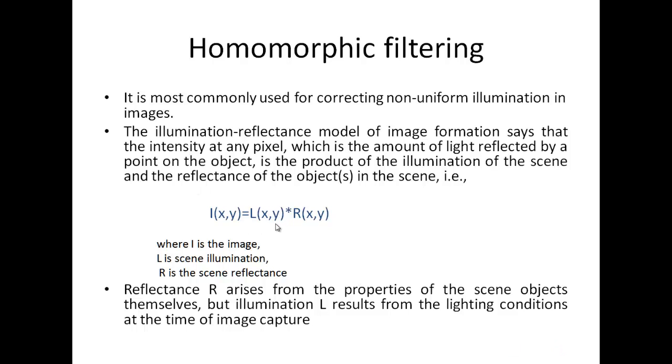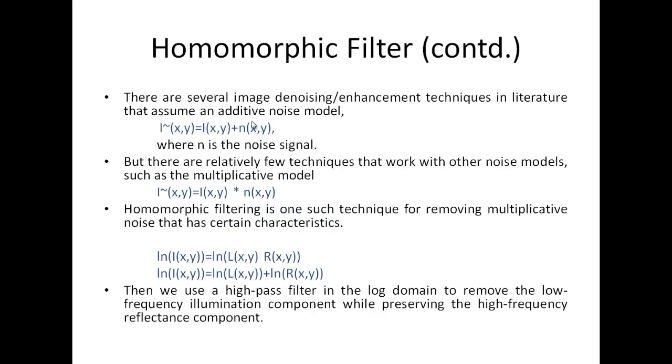We already know that the product of the scene illumination and the reflectance gives us the intensity at a particular pixel. Reflectance arises from the properties of the scene objects whereas illumination results from the lighting conditions and this can be changed.